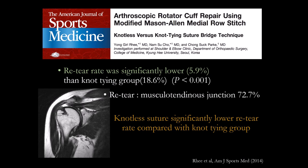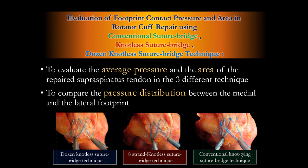This is a nice study from Dr. Yong-Kali from Korea. Failure often happens at the musculotendinous junction — if you do too much strangulation with the repair or place the medial row too tightly, you cut the blood supply and cause strangulation leading to cuff failure. I studied the construct of the cuff using the suture bridge technique. We use 12 sutures without knot tying — we call it the dozen knotless suture bridge technique.